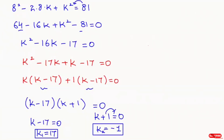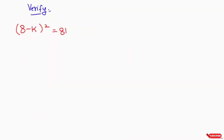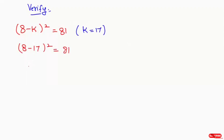Now I'm going to verify my answer. Taking k equals 17: (8 minus 17) whole to the power of 2 equals 81. We get negative 9, so (negative 9) to the power of 2 equals 81. We get a positive answer because of the even power: 81 equals 81.